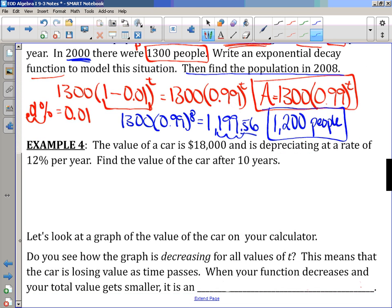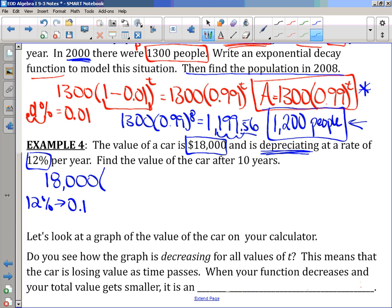Let's do another one. Value of a car is $18,000 and is depreciating at a rate of 12% per year. Find the value of the car after 10 years. So, here, we don't have to do what we did in the previous example where we wrote a function. They just want the answer. So, value of a car is $18,000. That's my principle. It says it's depreciating. It's another word for decreasing at a rate of 12% per year. 12% in decimal form would be .12. So, I need to do 1 minus .12 and I'm finding the value of the car after 10 years.